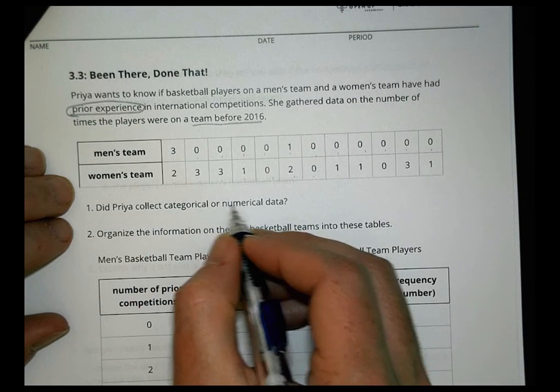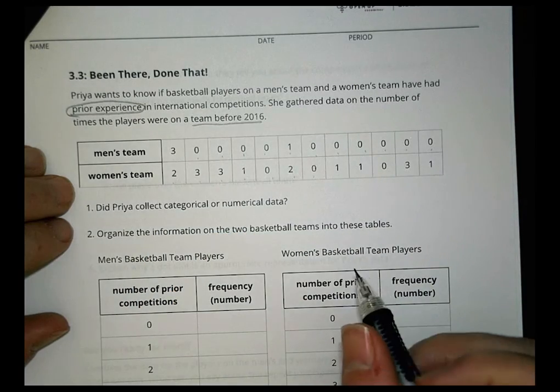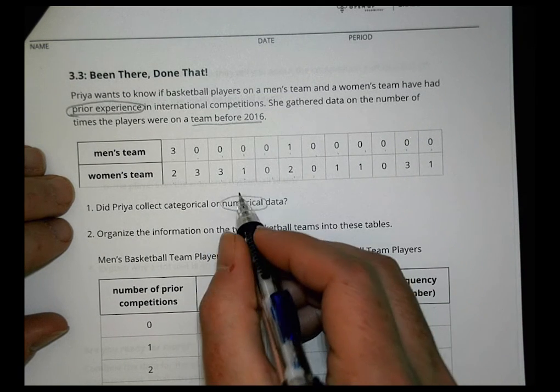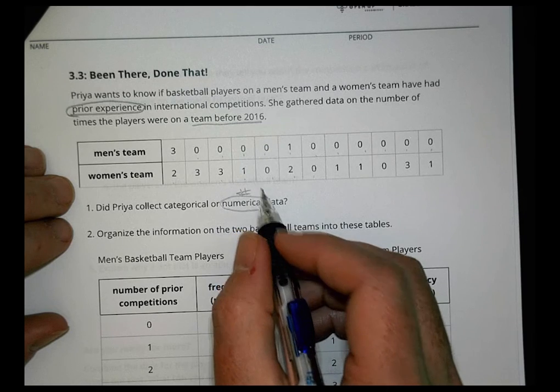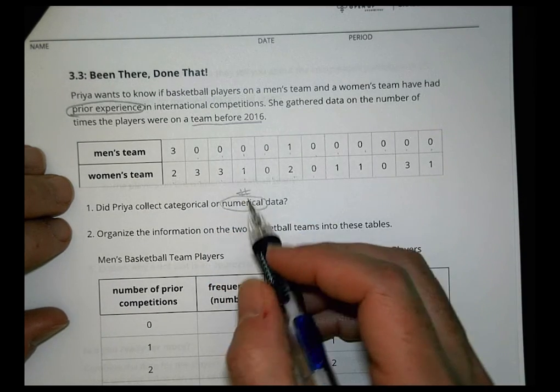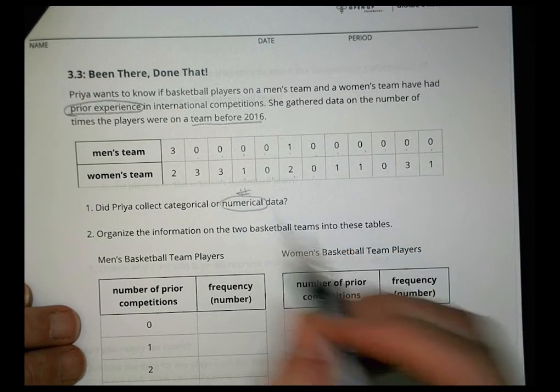So did Pryor collect categorical or numerical data? In this case here, we would say that she collected numerical data, not just because it's a number, but it's also going to be something we can compare. We can compare how many zeros, how many ones. We can do some work with it. So we're going to say numerical.